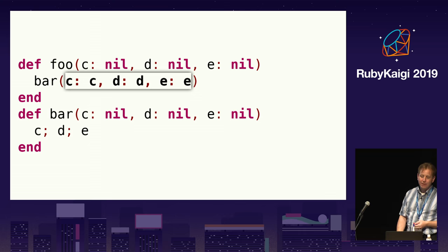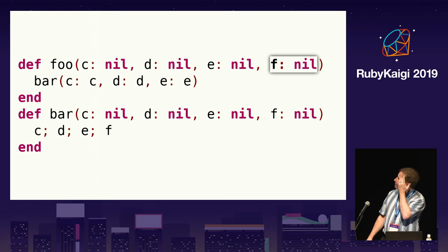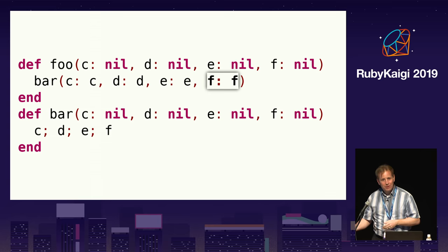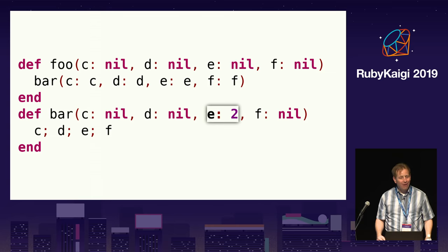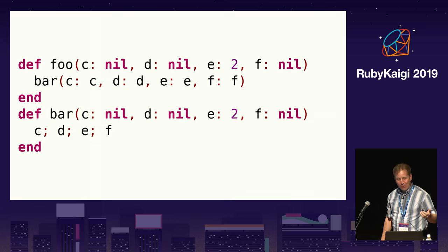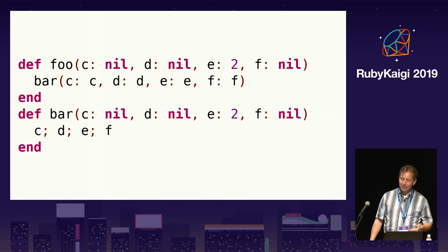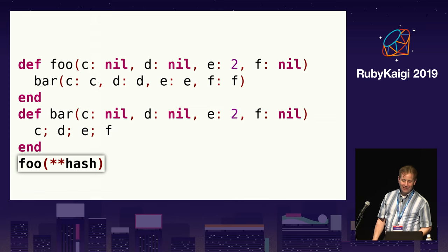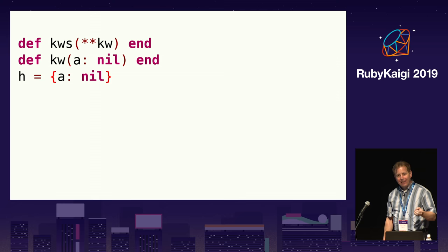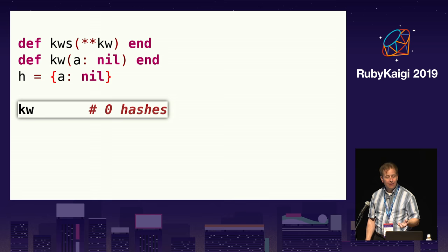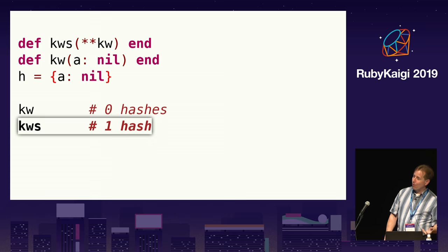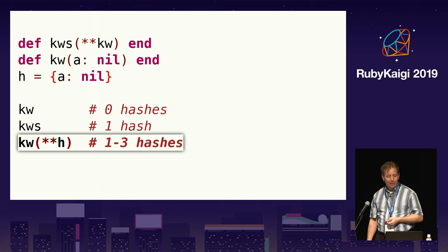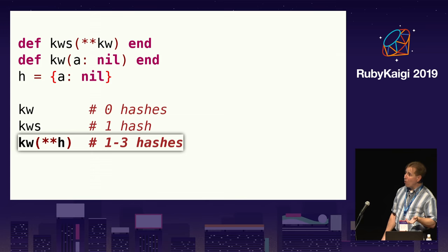Every time you add a keyword argument to bar, you need to add it to foo, and also make sure you add it when calling bar from foo. If you change the default value for a keyword argument in bar, you need to make the same change in foo. In general, this approach makes maintenance more difficult and increases complexity. When you have many methods that delegate option hashes, switching to this approach for keyword arguments is undesirable. The reason keyword splats are slow is that they allocate hashes. Passing no arguments to a method that accepts an optional keyword argument does not allocate a hash. Passing no arguments to a method that uses a keyword argument splat allocates one hash. Passing a keyword splat to a method that accepts an optional keyword argument allocates one to three hashes depending on the Ruby version.